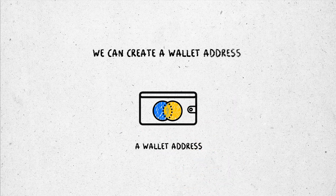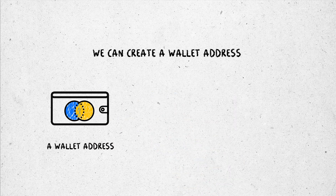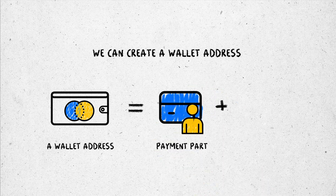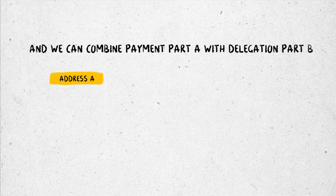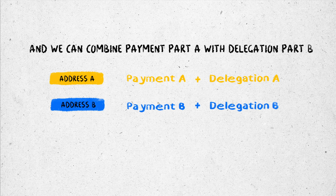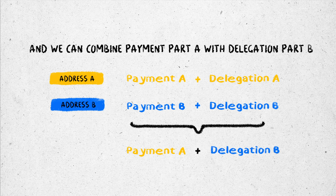However, we can create an address where the owner of the payment part collaborates with the delegation part of another one. For example, address A consists of payment part A and delegation part A; address B consists of payment part B and delegation part B. And we can combine payment part A with delegation part B. Such an address is called the Franken address.